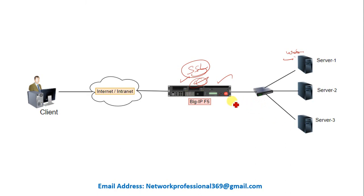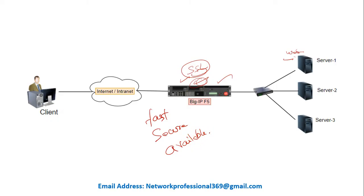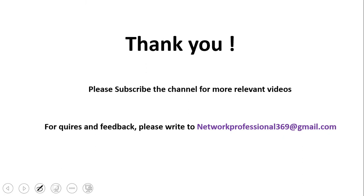So the three main important things that BIG-IP F5 ensures are that applications are fast, secure, and available. Thank you for watching the video. Please subscribe to the channel for more relevant videos. For any queries and feedback, please write to networkprofessional369@gmail.com. Thank you for watching.